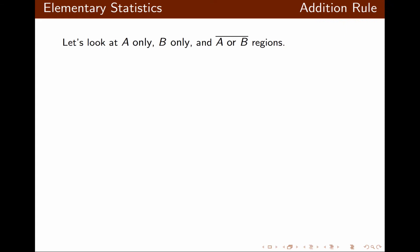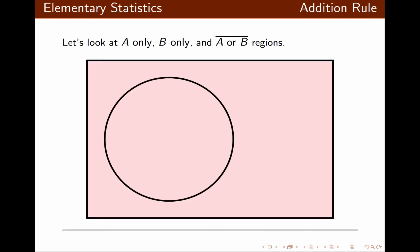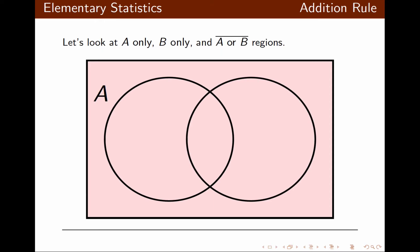Now let's look at A only, B only, and not A or B regions using Venn Diagram. We draw the circles for the events and label them. Probability of A and B would be the overlap. Probability of A only would be only the portion of A that is not common with B. Probability of B only would be only the region that is in B but is not shared with A. And probability of not A or B would be outside of the circles A or B.